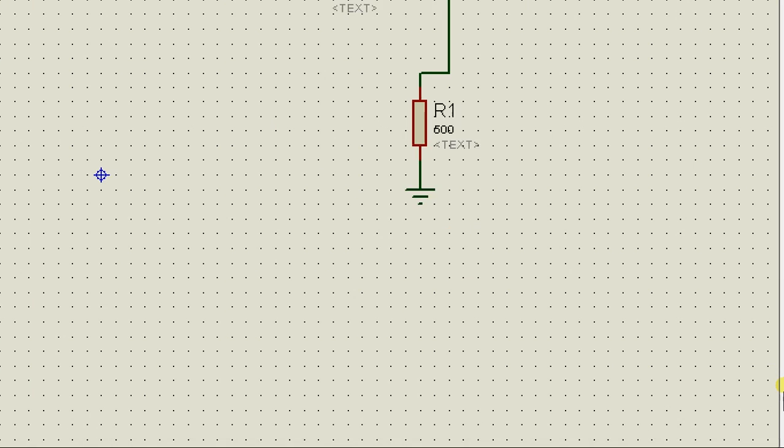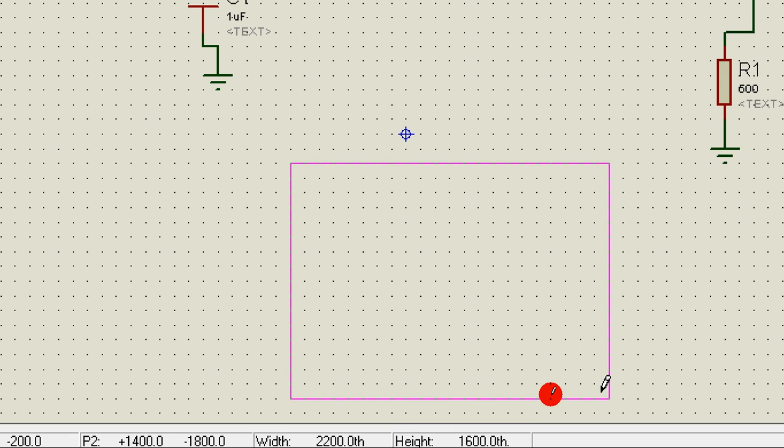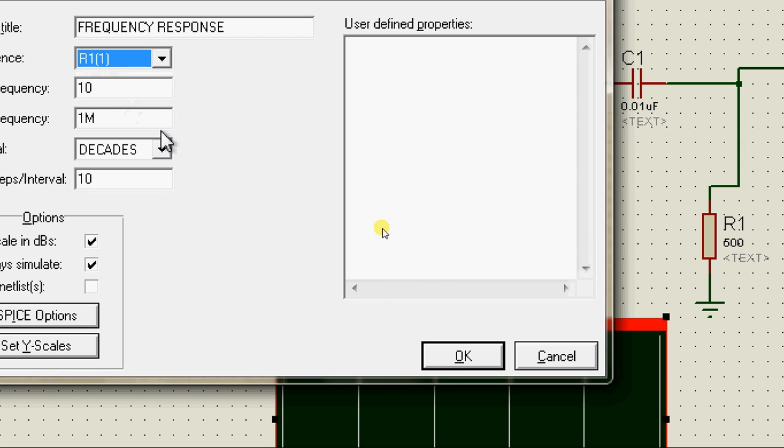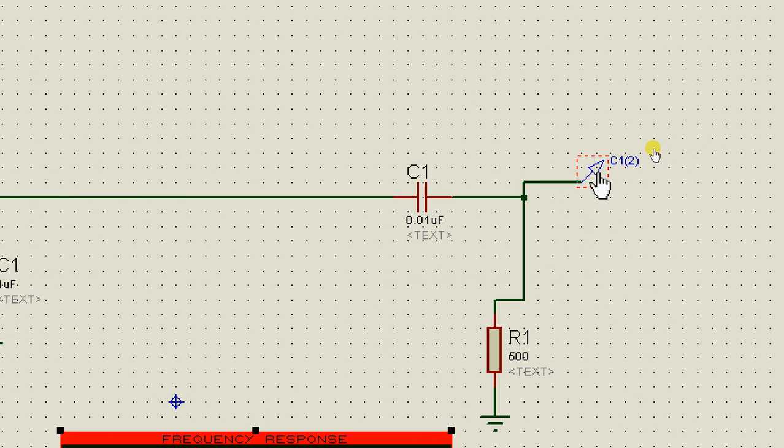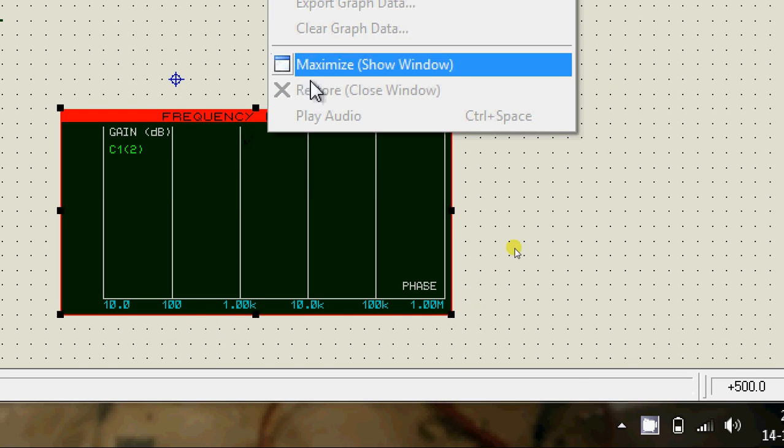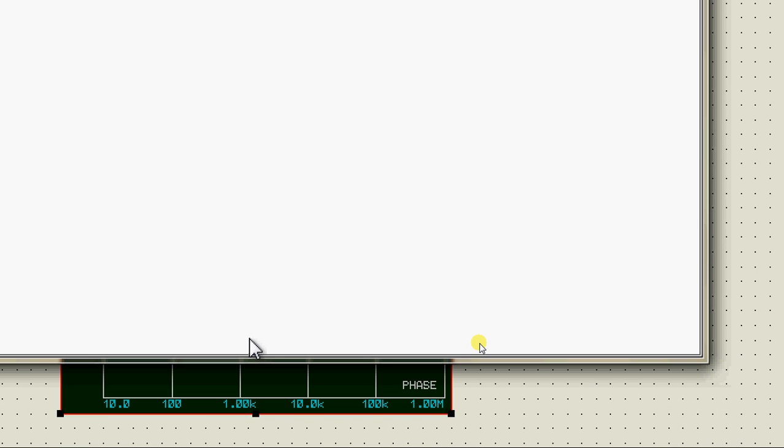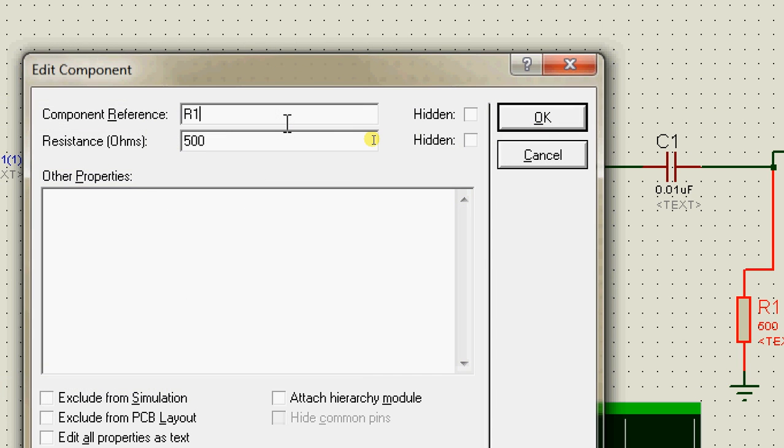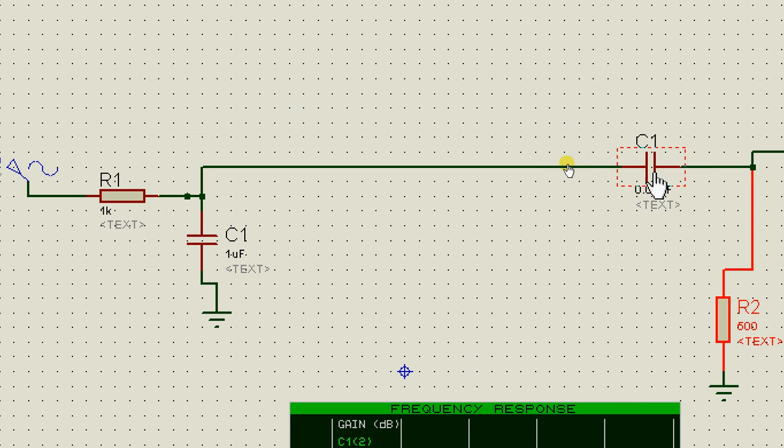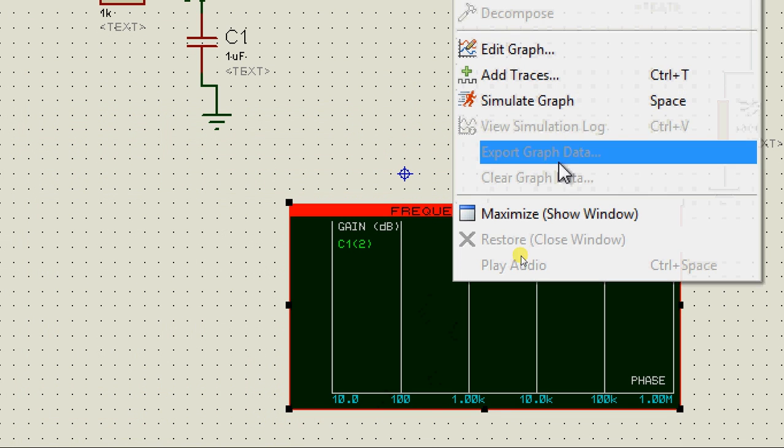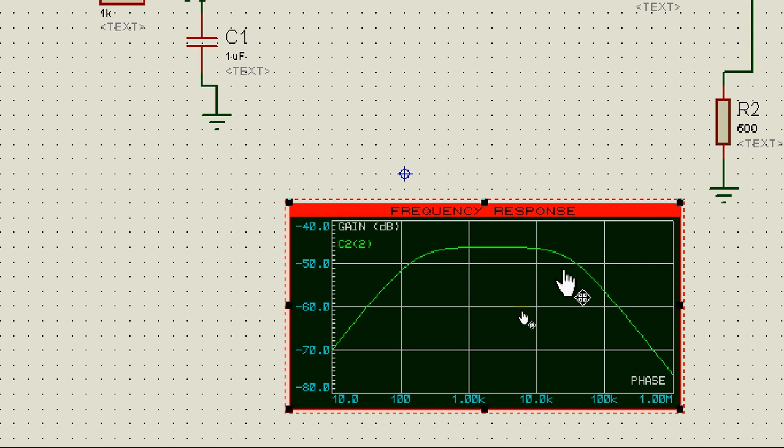Now let's analyze this circuit. Yeah, so this is how the frequency response of a band pass filter looks like.